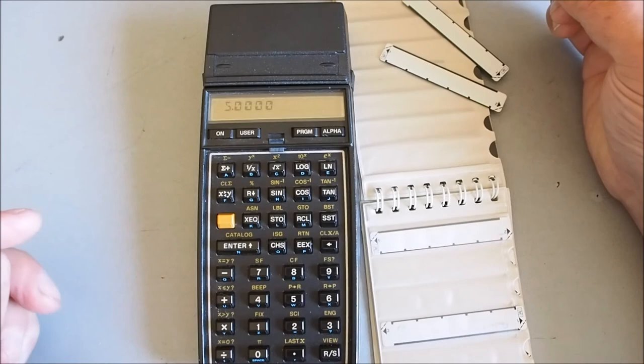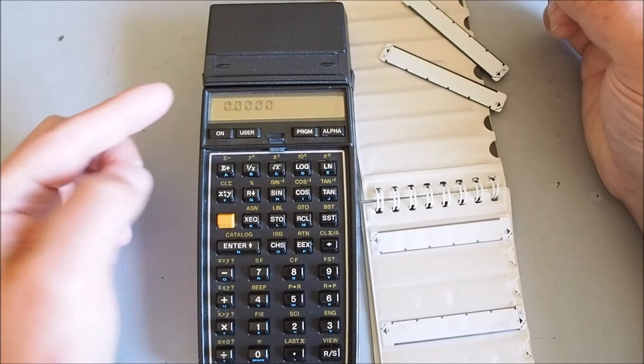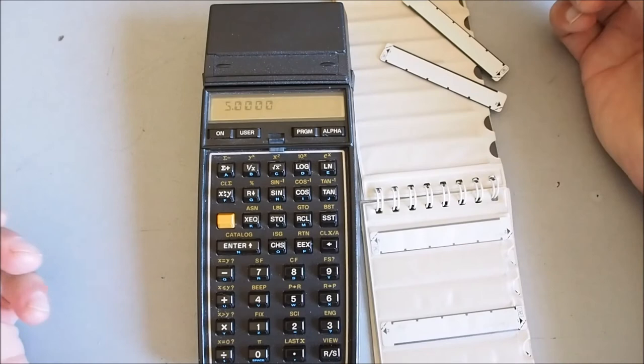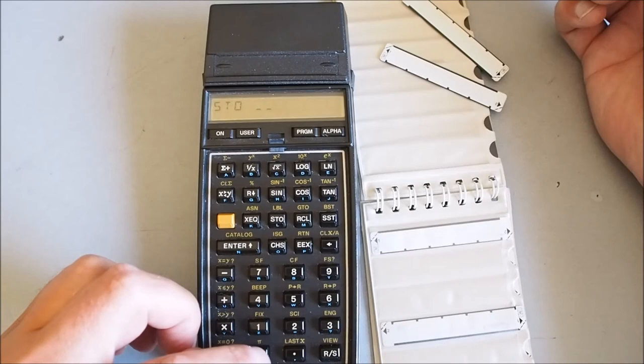Let's store five in register one. We'll clear it and if I recall register one now we should get five because that's what's sitting in the memory of the register. If I want to put the number 10 say and store that in register six.